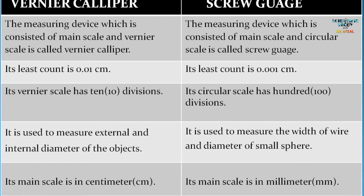Next point: the main scale of Vernier caliper is in centimeters, and the main scale of screw gauge is in millimeters. So these are certain differences between these measuring devices.